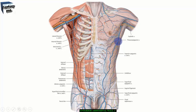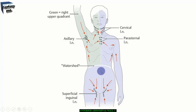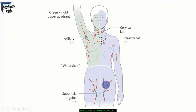The lymphatic drainage of the abdominal wall is divided into upper and lower regions by a curved watershed line located between the umbilicus and the costal margin. From the upper region, lymph drains to the axillary and parasternal nodes before draining to the right and left jugular-subclavian junction (the venous angle). From the lower region, lymph drains inferiorly to the ipsilateral superficial inguinal nodes, which drain to the external iliac and common iliac nodes, and eventually to the thoracic duct.